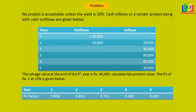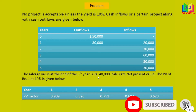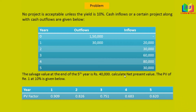The salvage value at the end of the 5th year is 40,000. At the end of the 5th year, the project is realizing 40,000 as salvage value. So it should be treated as a cash inflow. The net present value has to be calculated and the PV factor for rupee 1 at 10% is given.